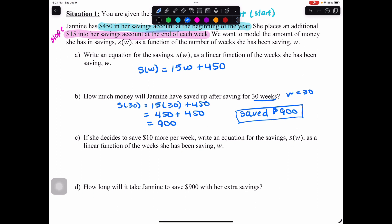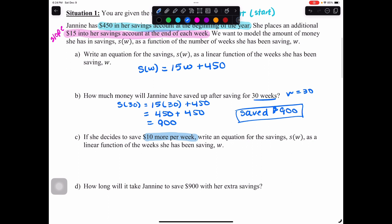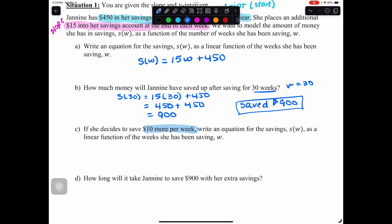In part c, if she decides to save $10 more per week, write an equation for the savings s of w as a linear function of the weeks she's been saving w. She's saving $10 more per week. That's affecting the rate at which she's saving, so it's an increase in our slope. Our slope was already 15, she's increasing it by $10, which means now our slope is 25. So s of w equals 25w plus 450.